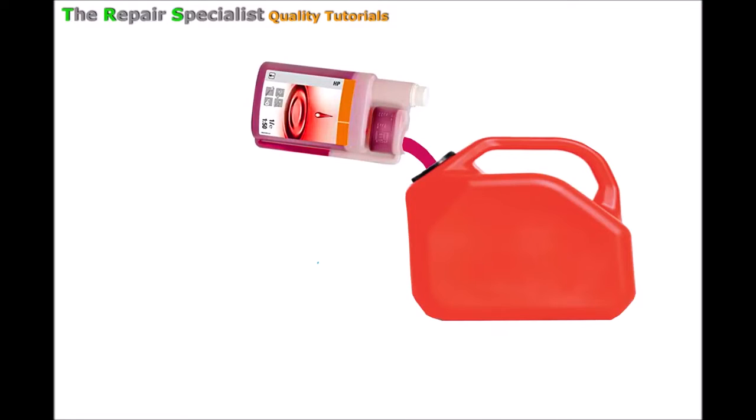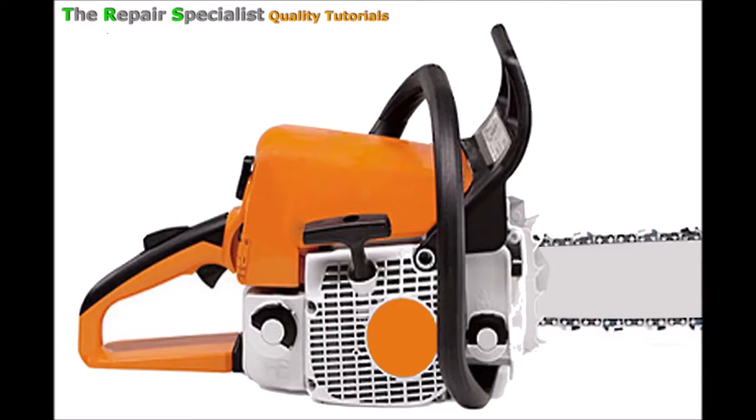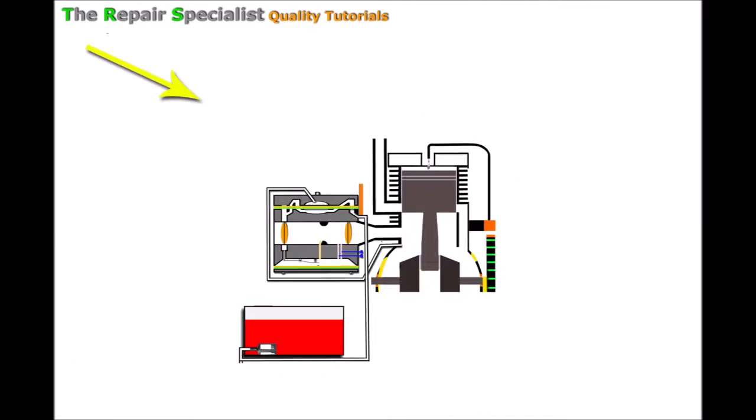Now let's take a look at why the fuel to oil constitution has to be correct. Let's take a look at the actual engine inside the chainsaw itself. Here we have our engine and fuel tank isolated there.